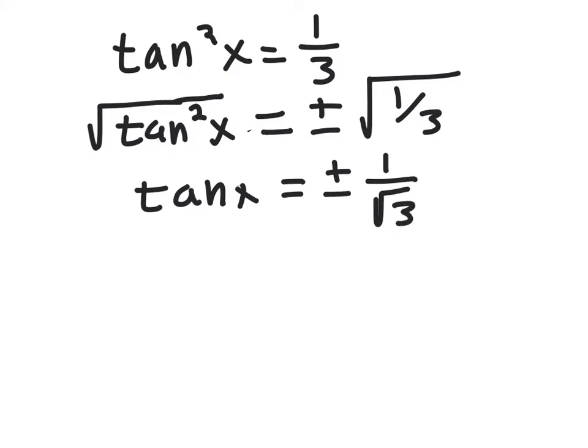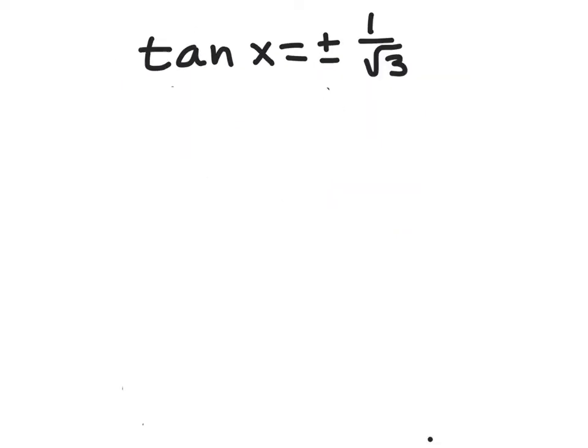Now normally we would rationalize from here, but in terms of trying to find the angle in which I take the tangent of to get 1/√3, I'm not going to rationalize. It's going to be easier to figure out if we don't rationalize. Okay, in order to find the angle, we're going to have to rewrite tangent in terms of sine and cosine. Tangent can be written as sin x / cos x, and that's equal to ±1/√3.